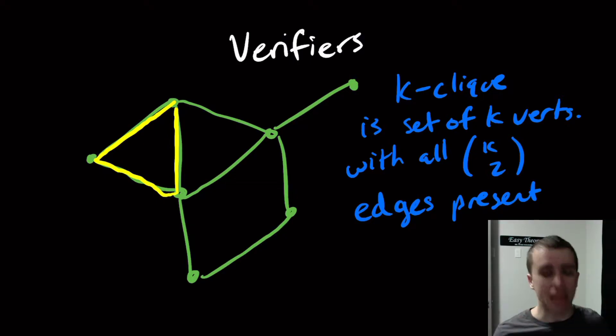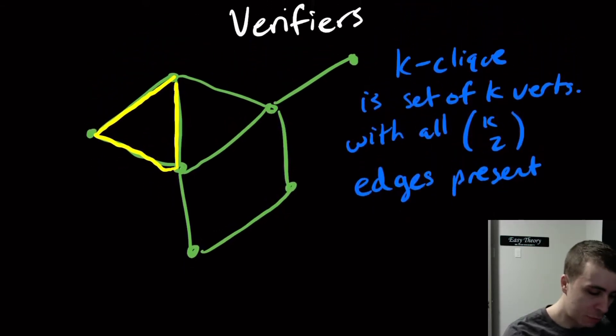But what if you had a really complicated graph and k is pretty big, like let's say 20? Then that would be a lot of work to be able to verify even a particular example, much less find a 20-clique in the entire thing. So verifiers are a way of providing some additional info in order to make this verification process easier.